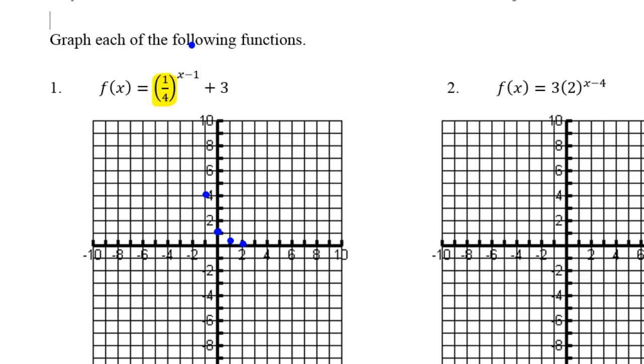This plus 3 is going to move the graph up 3. This minus 1 is going to do the opposite of what it looks like and will move us to the right 1. This is your up-down number, and this will be a left-right number, but negative is actually to the right. So we're going to go right 1 and up 3 with each of these points.